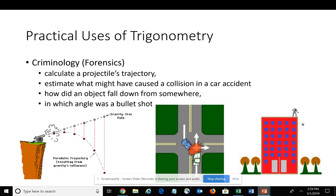How did an object fall down from somewhere? Like if someone jumps off a building or if something has fallen off of a building, they can determine the angle at which it fell and even the velocity. So you obviously use it a lot in criminology and forensics.